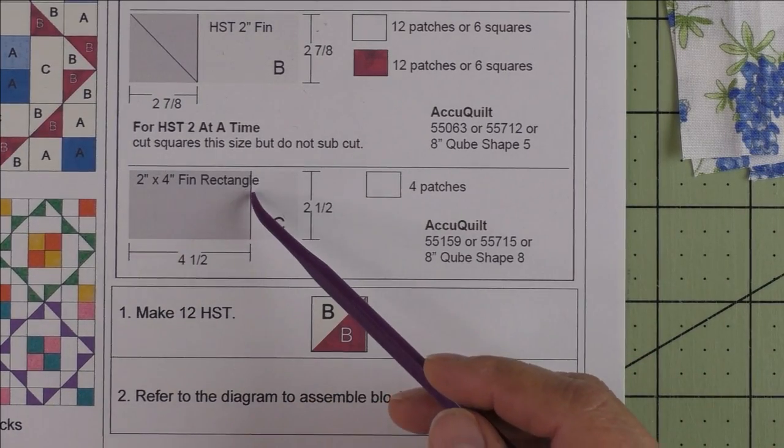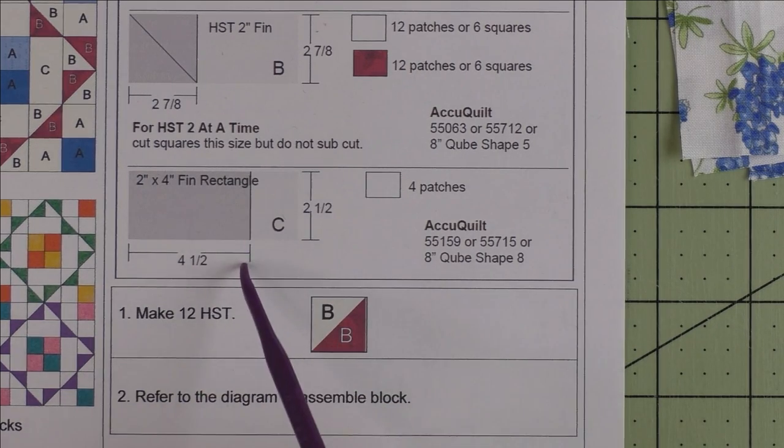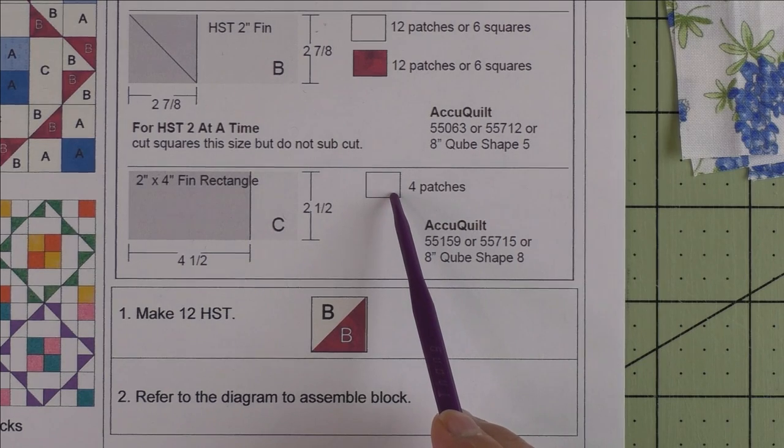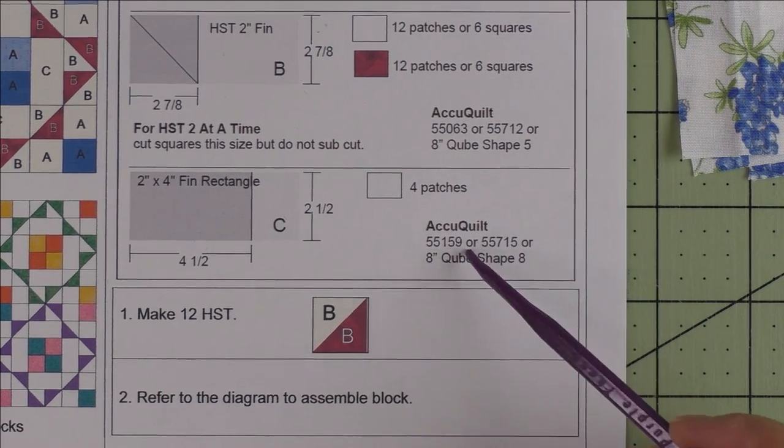Patch C is a 2 inch by 4 inch finished rectangle. We'll cut 4.5 inch by 2.5 inch rectangles and we'll need four patches for the background fabric. If you're using AccuQuilt, here are the dies you can use to cut that shape.